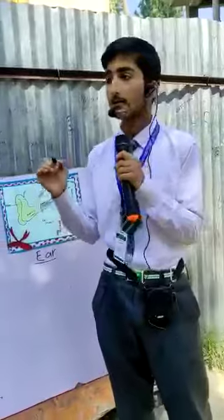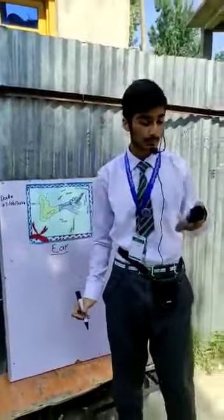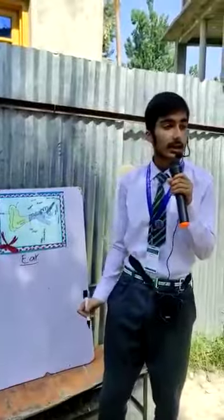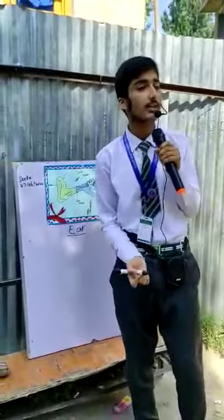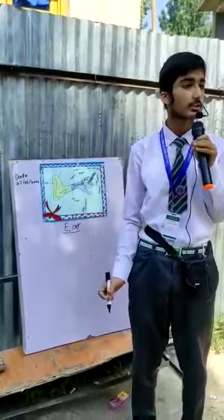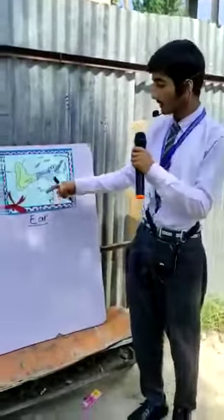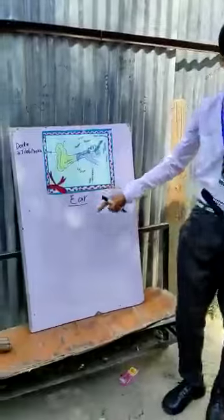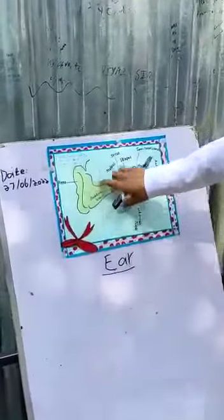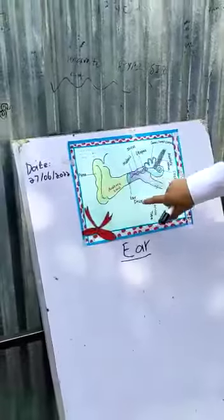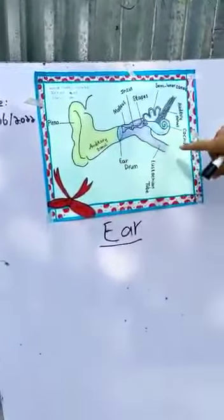Anatomically and functionally, ear has three regions. I will show you with the help of this chart. The first region is the external ear, the second region is the middle ear, and the third region is the inner ear.